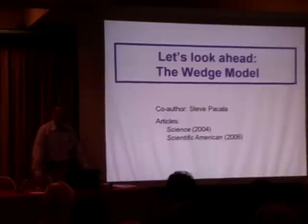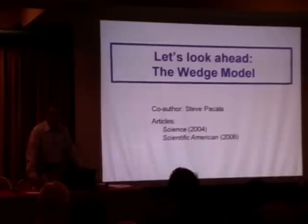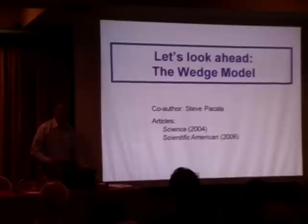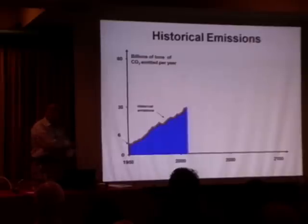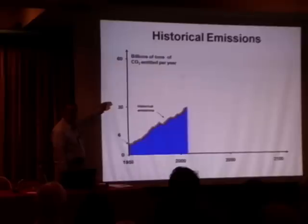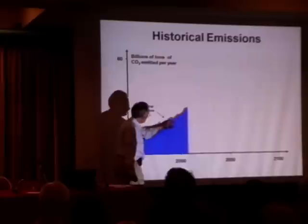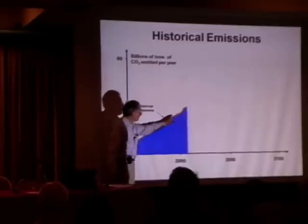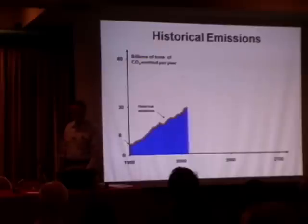Steve Pacala, an ecologist at Princeton, and I wrote a paper in 2004 that turned out to be amazingly helpful. People didn't have a language to talk about mitigating climate change, and we produced a very simple way of thinking about it. We drew this graph — keeping the unit of billions of tons of CO2. Here we are at 30 billion tons today; in 1950 it was about six billion tons, one-fifth as much. All this climb has happened in the last 50 to 60 years.